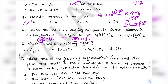Question 15: In chromite ore, the oxidation numbers of iron and chromium are respectively — the answer is +2 and +3. Option D is correct.